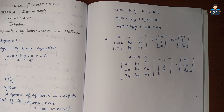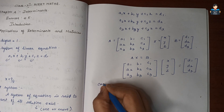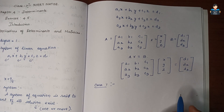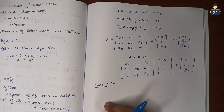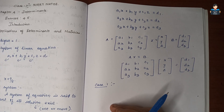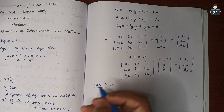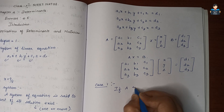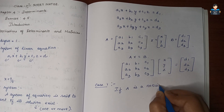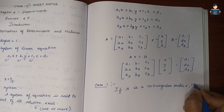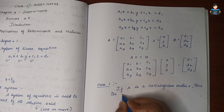There are two cases. Case 1: if A is a non-singular matrix, then its inverse exists. A non-singular matrix means the determinant of A is not equal to zero. If A is non-singular, its inverse exists.